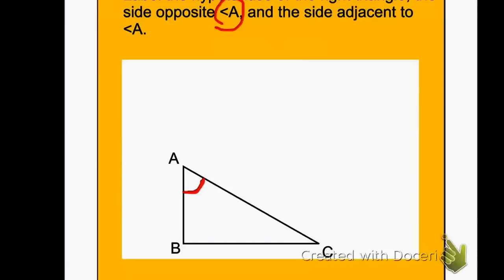I want to label the hypotenuse. If you did your definition of the hypotenuse, it should be the longest side in the triangle — the side that's across the triangle from the right angle. So this is your hypotenuse; I'm going to label it with an H. We want to label the side opposite angle A.